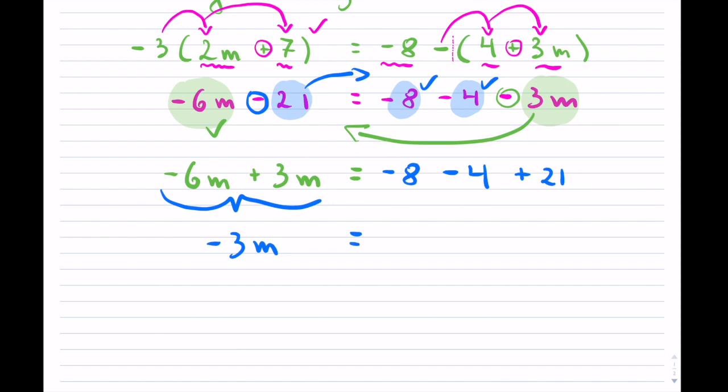So collecting these like terms, so negative six plus three is negative three m equals, and now I have, so negative eight minus four is negative 12, and then plus 21. So now you can do that, and if you can't do it in your head, you can always just do it on the side or use a calculator for yourself. So that's going to be nine, so now what do we do?